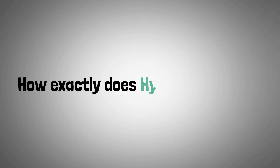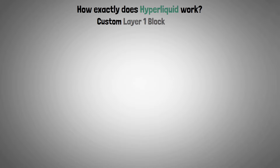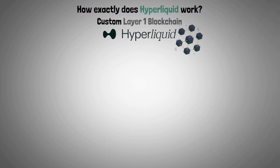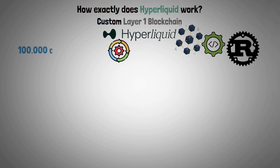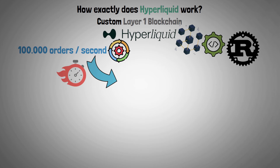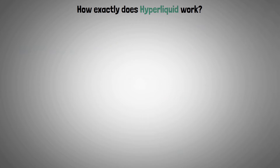Now let's look at how exactly Hyperliquid works. Its custom Layer 1 blockchain, developed using the Rust programming language, can process up to 100,000 orders per second. Handling the massive volumes of quick transactions typical of high-frequency trading requires this high throughput.